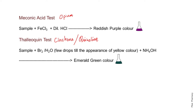For cinchona alkaloids, also called quinoline alkaloids, the Thalleioquin test is performed. The reagent is bromine water and dilute ammonia. When the sample reacts with the Thalleioquin reagent, it gives an emerald green color, indicating a positive Thalleioquin test.